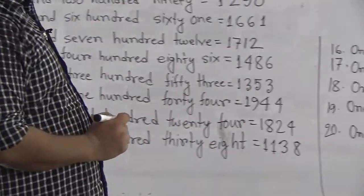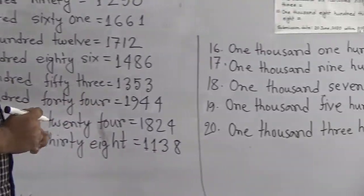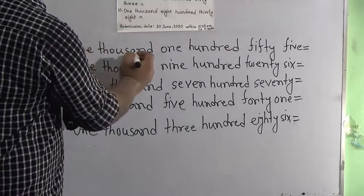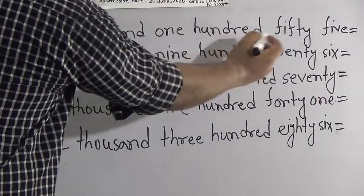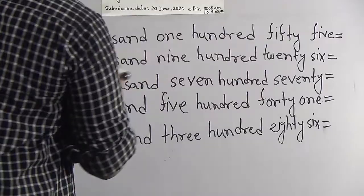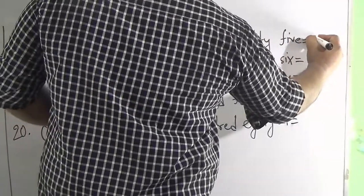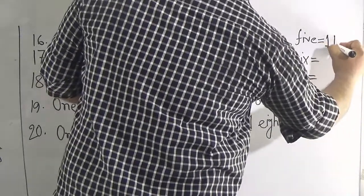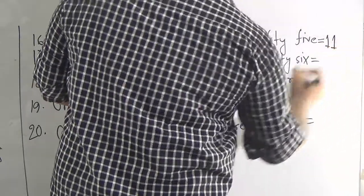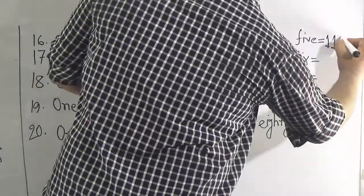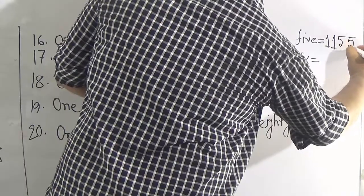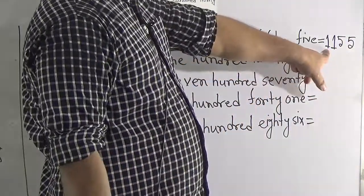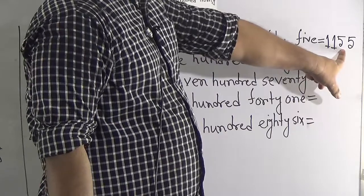Next, our next number is 1,155. We write 1,100 — 1,100 means 1 and 55 means 5 and 5. So it is called 1,155.